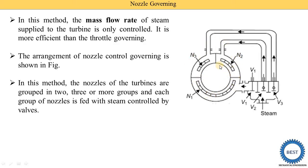In this diagram you see there are three groups, though it is also possible to have more than three groups or just two groups. Each group is controlled by its respective valve — N1 group is controlled by V1, N2 group is controlled by V2, and N3 is controlled by V3.